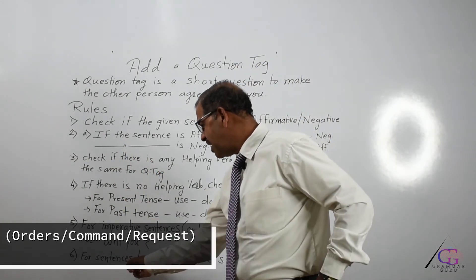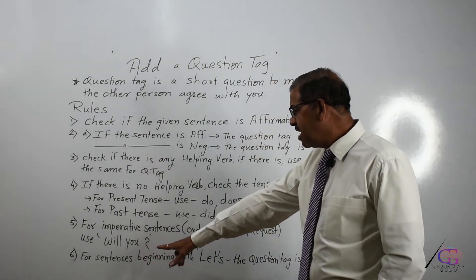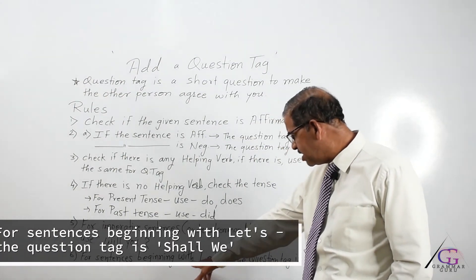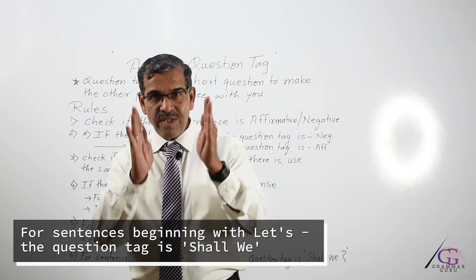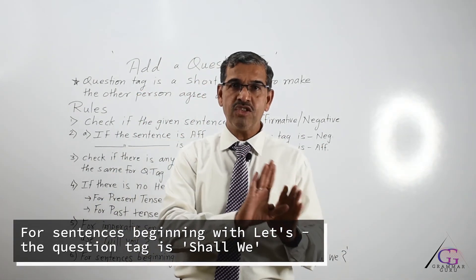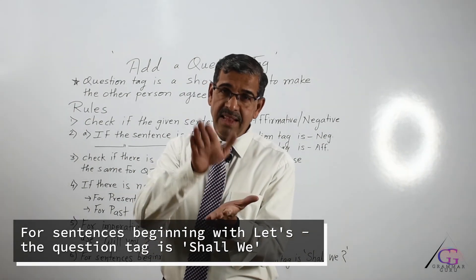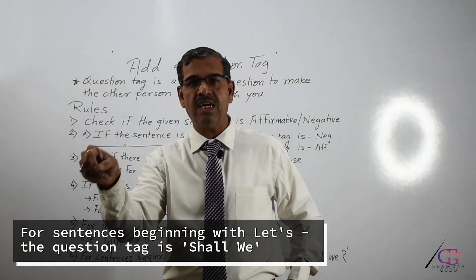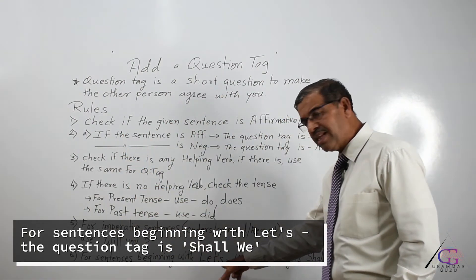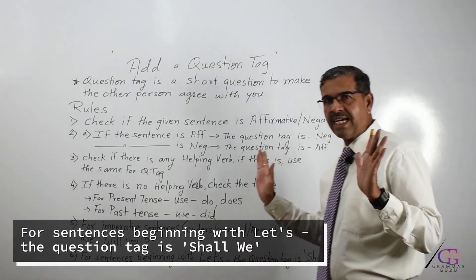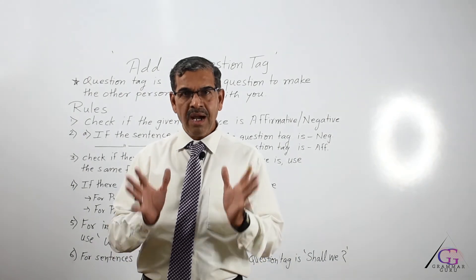Rule 6: If the sentence starts with 'let's' — that is, 'let us' — it is a suggestion, not a simple imperative. For all sentences beginning with 'let's,' the question tag is fixed: it is only 'shall we.' Note: if a sentence starts with 'let' (without 'us'), it is still an imperative and uses 'will you.'